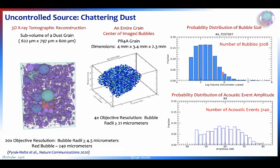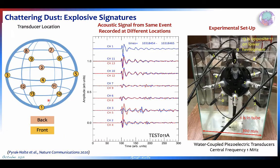We've looked at the size distribution of the CO2 bubbles that are trapped, and it turns out there's a rough correspondence with the magnitude of the acoustic events and the size distribution — you can imagine that the larger the bubble, the more energy is contained in it.